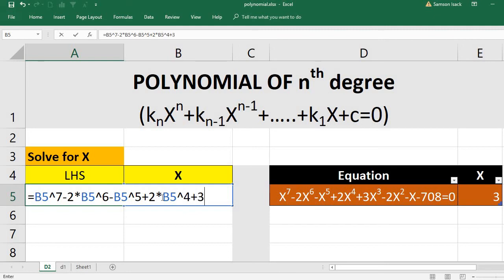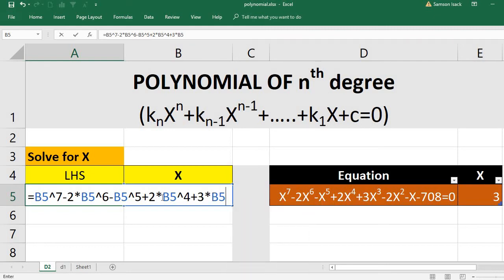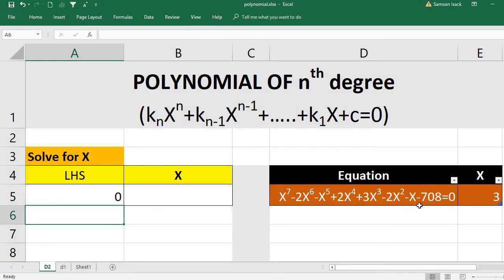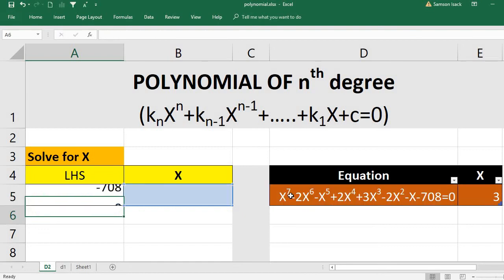Plus 3 into B5 power 3, which is B5 cube. Then minus 2 into x square, which is B5 square. Then minus x, which is nothing but minus B5, minus 708. All right, I'll put 3. Is it 0? Yes, okay.